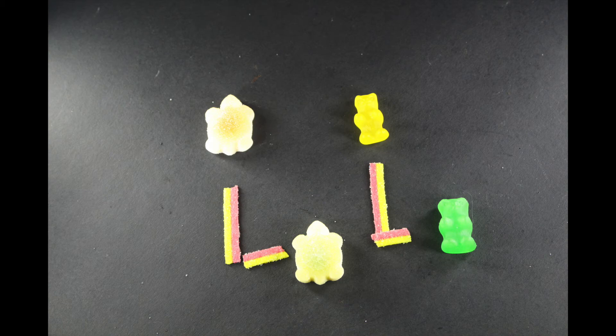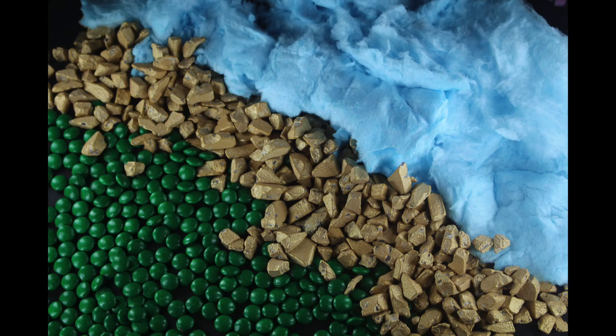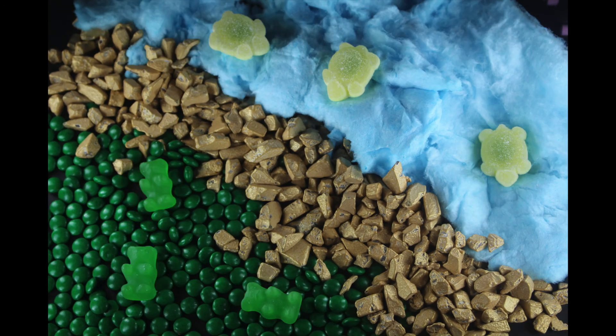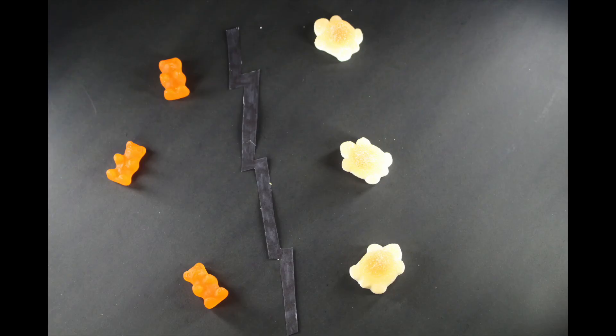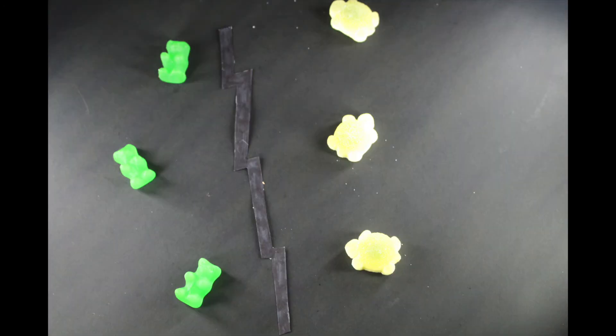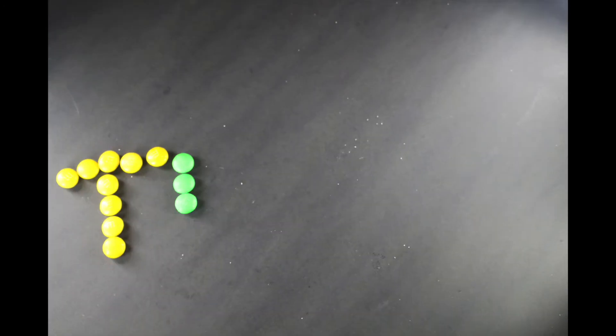Convergent evolution is the process whereby organisms not closely related evolve similar traits of having to adapt to similar environments. Parallel evolution is where related species grow and evolve similar structures while being separated.